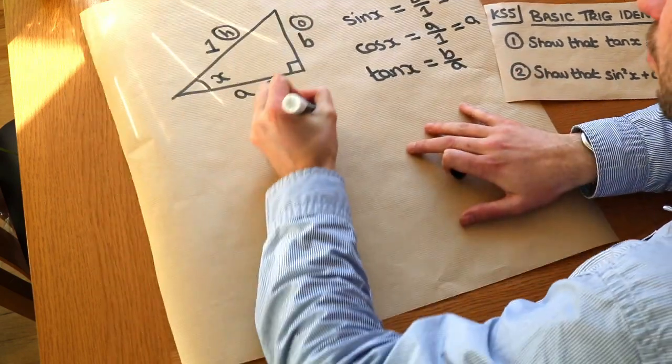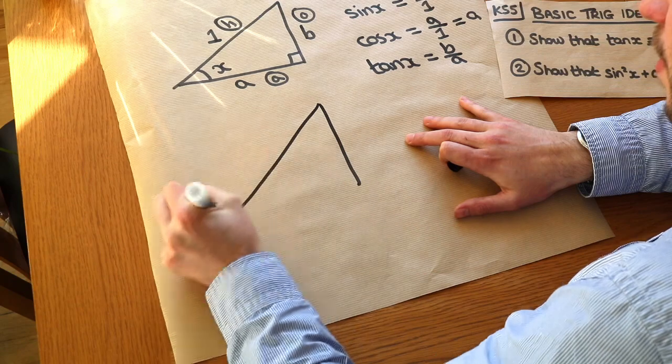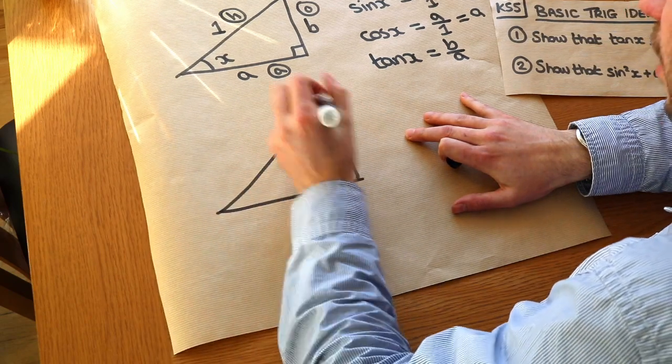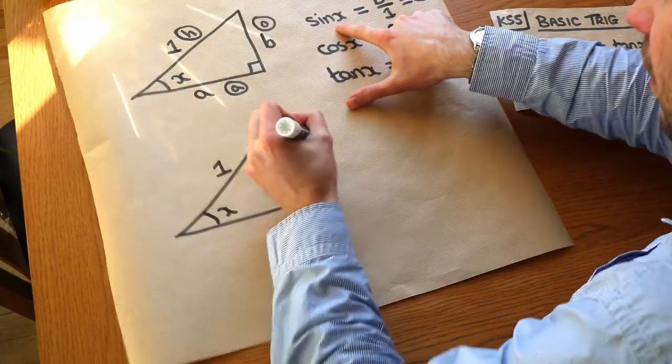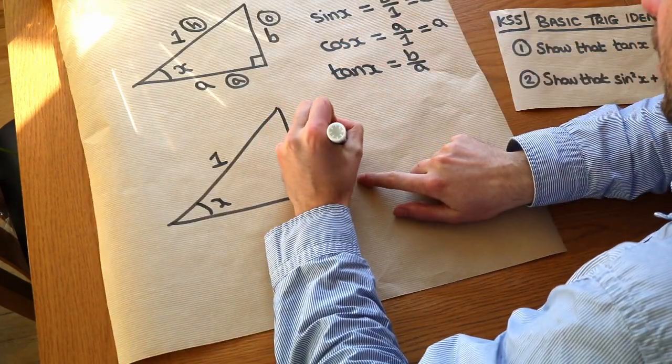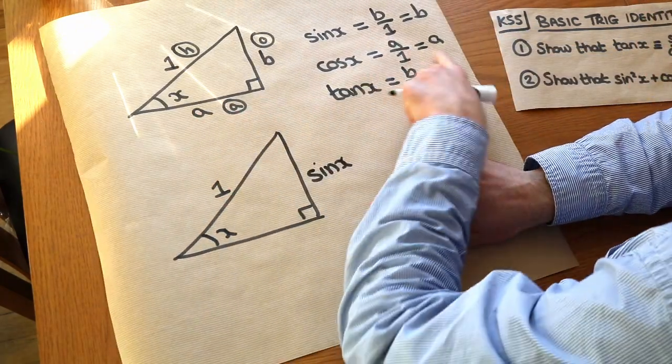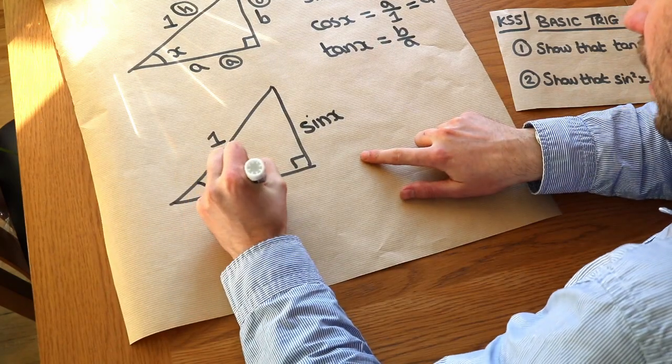So now we know what a and b are. Let's just redraw this, but putting in those side lengths that we have. So we know that b is sine of x, so let's label this side as sine of x. And a, we worked out, was cos of x, so we can put cos of x here.